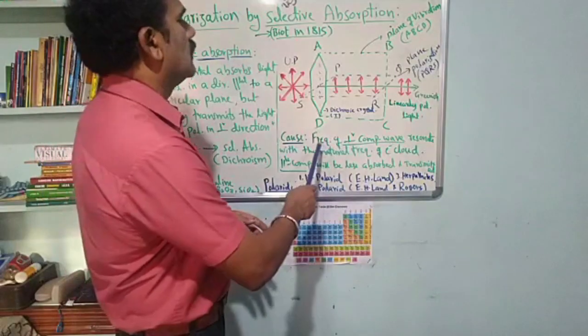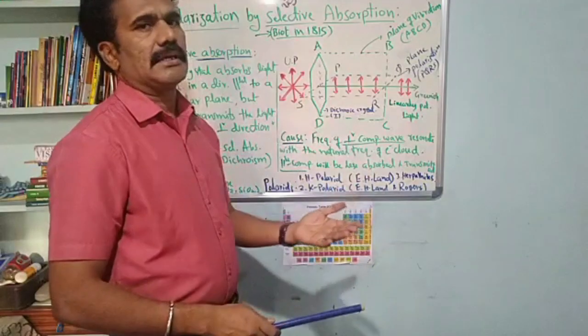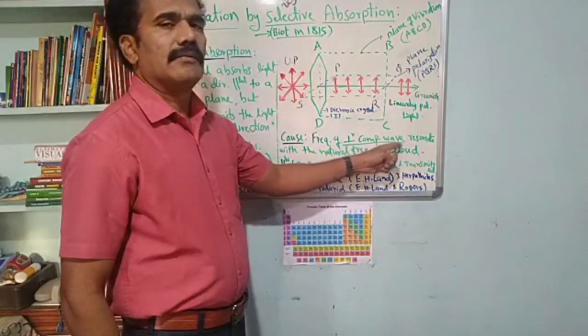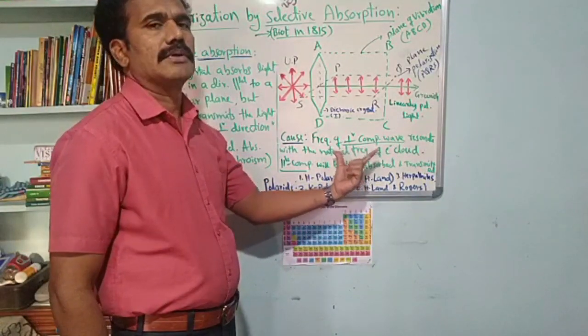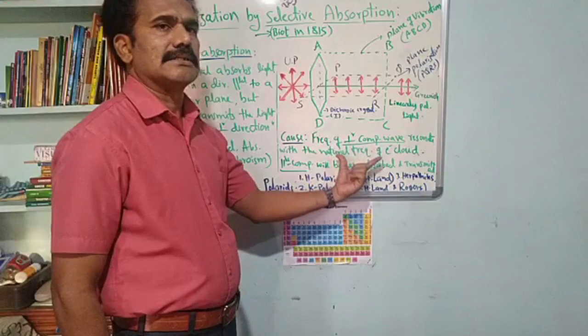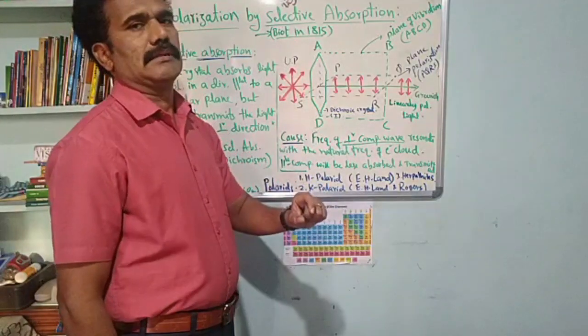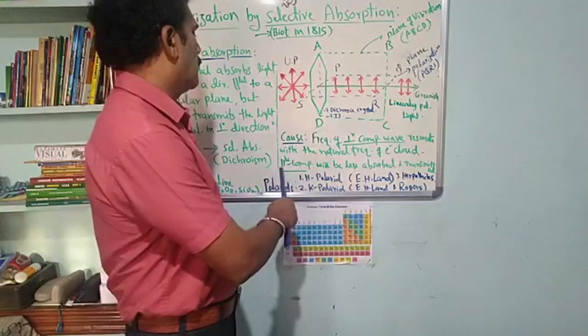when the frequency of the perpendicular component waves matches the natural frequency of the electrons inside the crystal, then that particular component vibration of light is absorbed by the crystal. The remaining components are not absorbed. The parallel components are not absorbed, or we can say less absorbed, depending upon the thickness of the crystal.